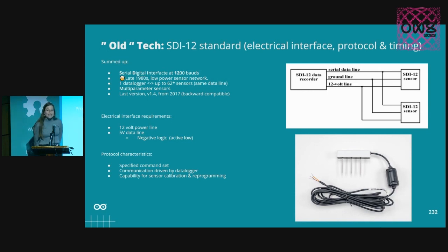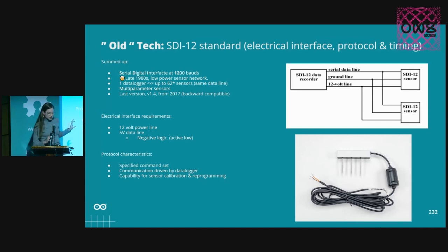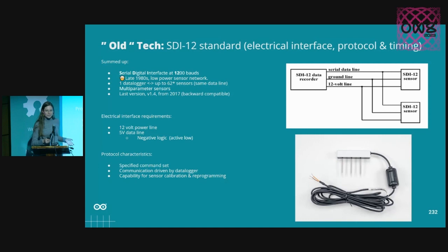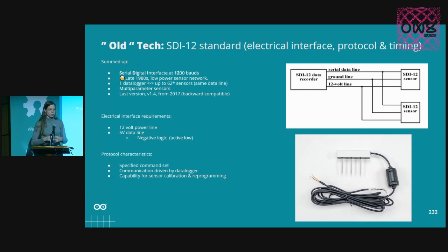Let's break the talk down. First, the old tech part. I'm referring to the SDI-12 standard, which includes the electrical interface, the protocol, and the timing. To sum it up: SDI-12 is short for Serial Digital Interface at 1200 baud — so it's a very slow communication protocol. It was born or standardized in the late 80s. It was developed to be used mainly in agriculture for field monitoring or large area monitoring, with the idea of having a low-power sensor network, which in the late 80s was mainly wired.